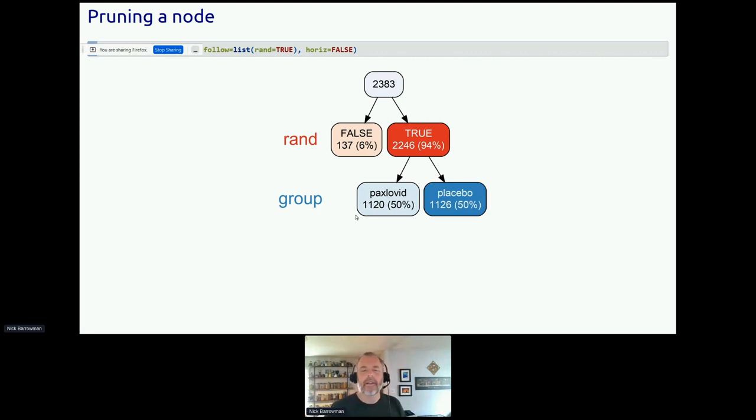So in a pruning step, and there are several ways in vtree to do pruning. In this case, I've used the follow command, and follow says only follow below the node true for randomization. So it doesn't follow below false, and that gets rid of the missing value node. But there are other ways to do pruning in vtree.